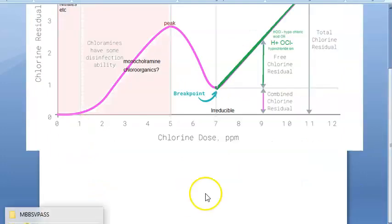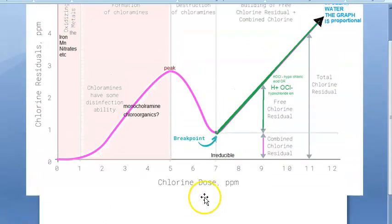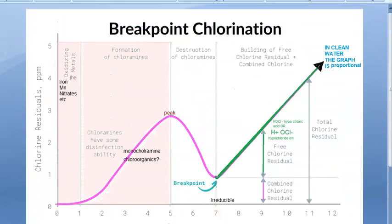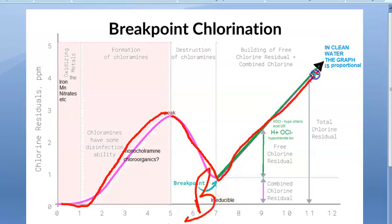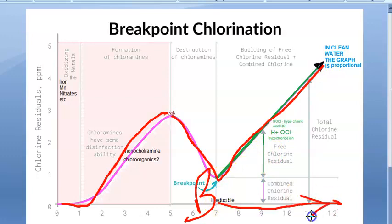Let's recap: first, no residue; then a rise in combined residual chlorine; then a peak; then a fall in combined residual chlorine. At the breakpoint, free residual chlorine starts appearing. When you continue to add chlorine after the breakpoint, the chlorine becomes free residual chlorine.